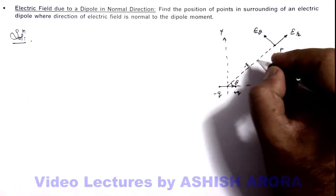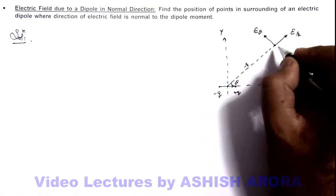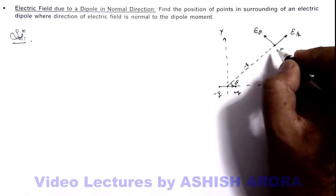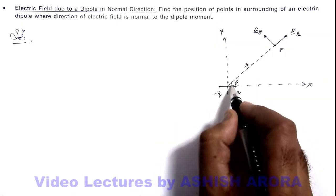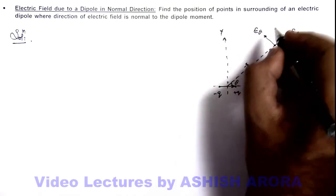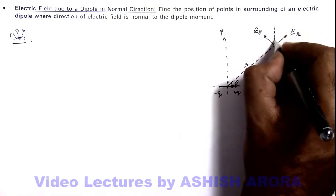Now we are required to find the position of this point in surrounding where the electric field exists in the direction normal to the dipole moment. As the dipole is placed along the x-axis, we can consider the electric field exists only in the y-direction.